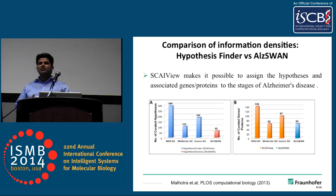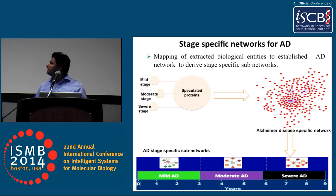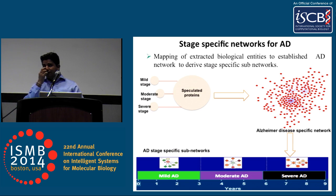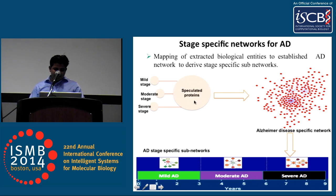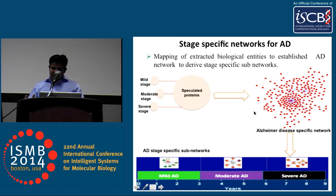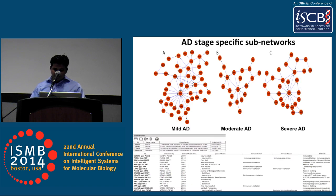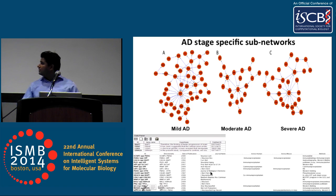Next, we wanted to build stage-specific networks for Alzheimer's disease. We already have a larger Alzheimer's disease network found by curating literature. We took the speculated proteins for each stage and mapped them onto this Alzheimer's disease network to generate separate mild, moderate, and severe stage networks. All of these networks are further annotated by which hypotheses support each particular network and what kind of experiment was done to validate each protein-protein interaction.